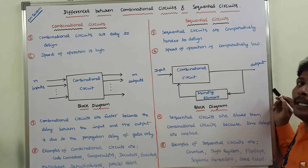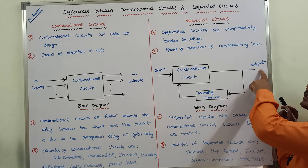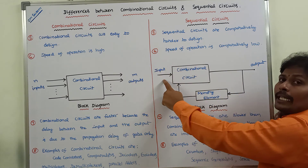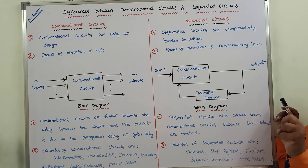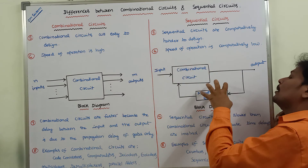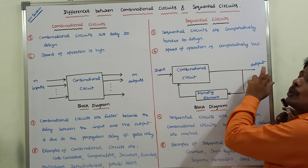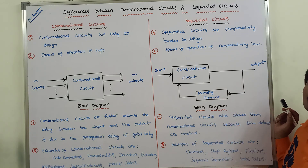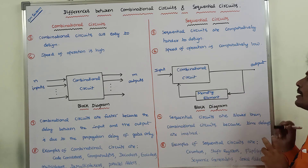One more important point: the output of a sequential circuit depends not only on the present inputs, but also on the past history of the sequential circuit. The next state of the sequential circuit also depends on the present input and the present state. Based on these two, the output and the next state of the sequential circuit can be determined. These are the eight differences between combinational circuits and sequential circuits.